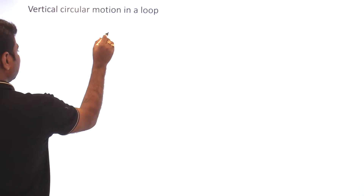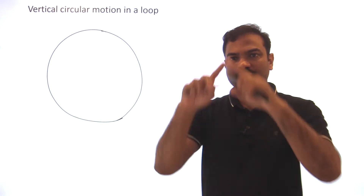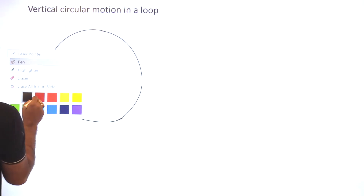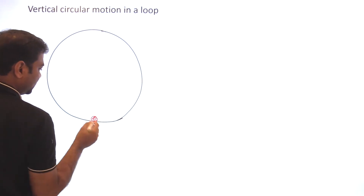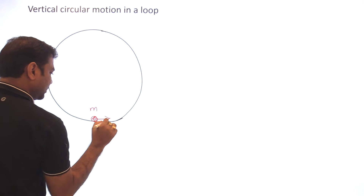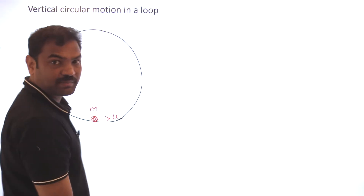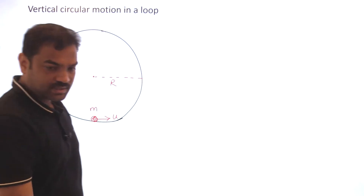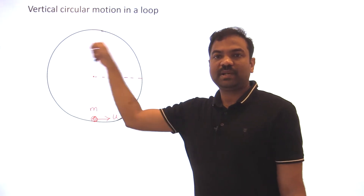What is vertical circular motion in a loop? Imagine a cylindrical surface — you can take a sphere, cylinder, anything. Now instead of a pendulum string, I'm taking one ball of mass m. I want to give it velocity u at the bottommost point so that it completes the vertical circle and comes back. The radius of the cylinder is r. We have to find what conditions on u will make it complete the vertical circle.